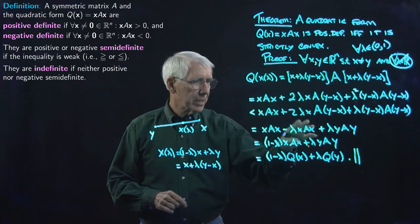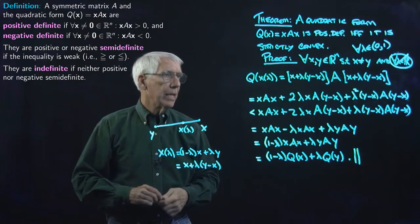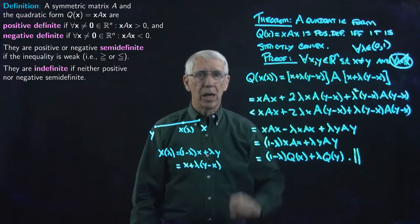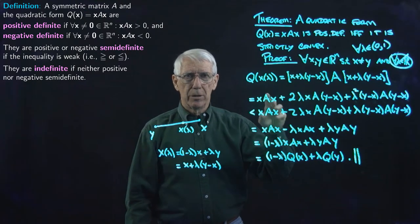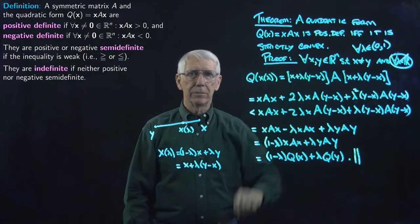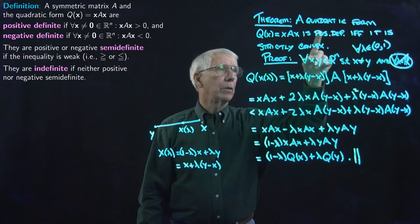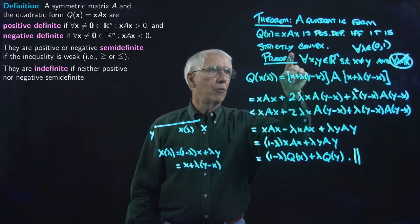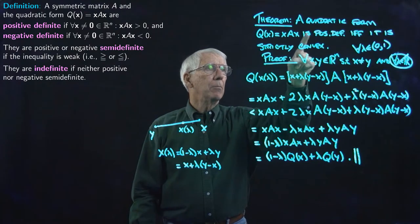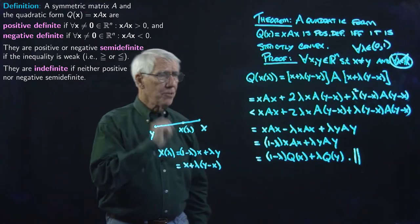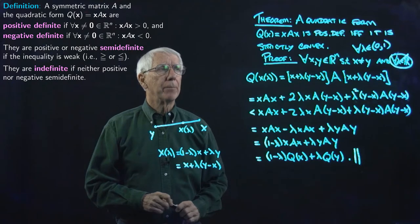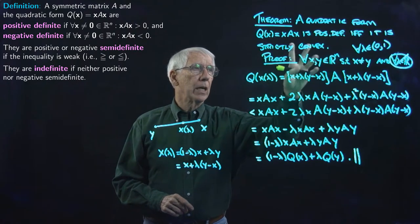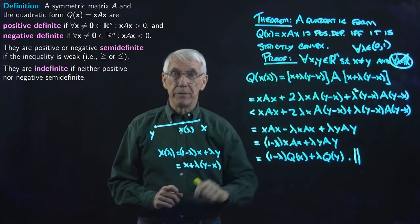It wasn't hard — it involved a little matrix algebra that I left out, but that you can do. So we've proved that if we have a positive definite quadratic form, then it is a strictly convex function. As a corollary, by taking the negative of q and A, if the quadratic form is negative definite, then it's strictly concave. But this is if and only if, so we also have to show that if the quadratic form is strictly convex, then it must be positive definite.